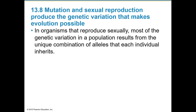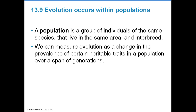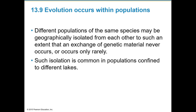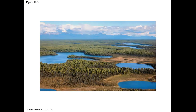In sexually reproducing organisms, most genetic variation results from the unique combination of alleles each individual inherits. A population is defined as a group of individuals of the same species that live in the same area and interbreed. We can measure evolution as a change in the prevalence of certain heritable traits in a population over generations. Different populations of the same species may be geographically isolated such that genetic exchange never or only rarely occurs, as is common in populations confined to different lakes.